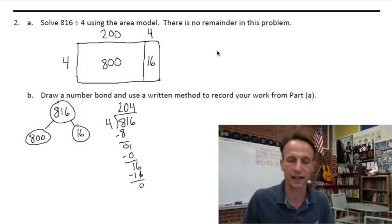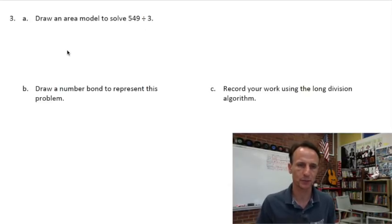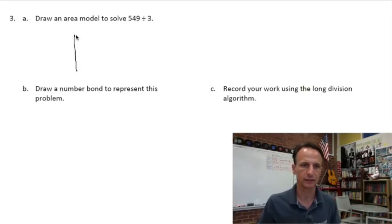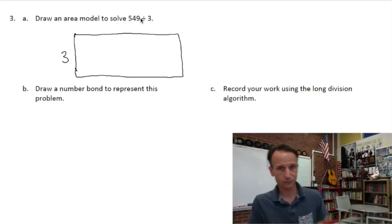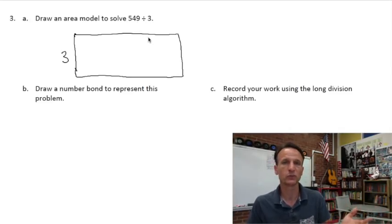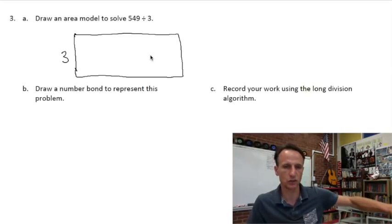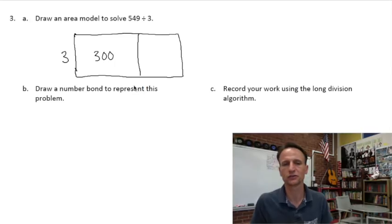On to number three! We have 549 divided by three. For the area model, you have to do a little more thinking — not necessarily harder, you just have to think it out. Draw a nice generous-sized rectangle; we're dividing by three so that's our length. When I look at 549, I think about handing out donuts to three people: start by giving everybody 100 donuts — 100, 200, 300 — just get 300 donuts handed out. So my first partition is 300 out of 549, which leaves 249.